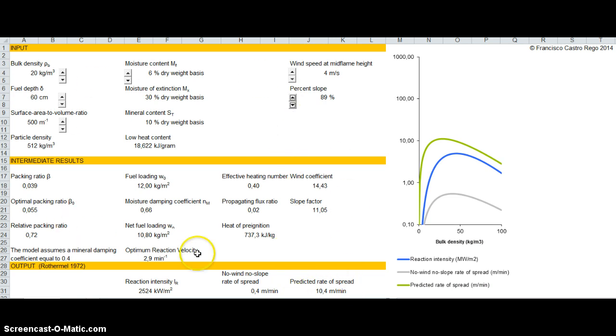So this was a possible way to have first estimates of rates of spread and reaction intensities based on these inputs. These are the same important variables used in the Rothermel systems in Behave. This is, let's say, a simplified version of Behave.